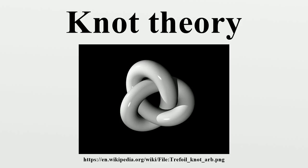A knot in three dimensions can be untied when placed in four-dimensional space. This is done by changing crossings: suppose one strand is behind another as seen from a chosen point — lift it into the fourth dimension so there is no obstacle, then slide it forward and drop it back, now in front. Analogies for the plane would be lifting a string up off the surface or removing a dot from inside a circle. In fact, in four dimensions, any non-intersecting closed loop of one-dimensional string is equivalent to a non-knot. First push the loop into a three-dimensional subspace, which is always possible though technical to explain.